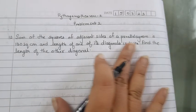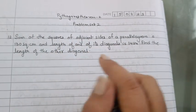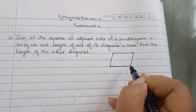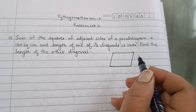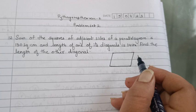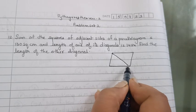So what has been given: sum of the square of adjacent sides of the parallelogram is 130 square centimeter. And the length of one of its diagonals, 1 diagonal length is 14 centimeter. Find the length of the other diagonal. So we have 2 diagonals to make it.